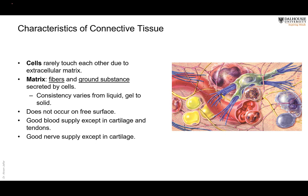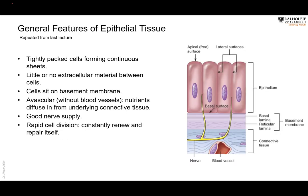Blood supply is not good in cartilage and tendon. That's why if you have an injury to a tendon, it takes a long time to heal. If the tendon is completely torn, it has to be treated surgically because it won't heal by itself due to poor blood supply. Connective tissue also has a good nerve supply, except cartilage, which doesn't feel anything.